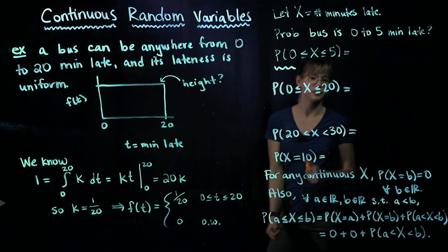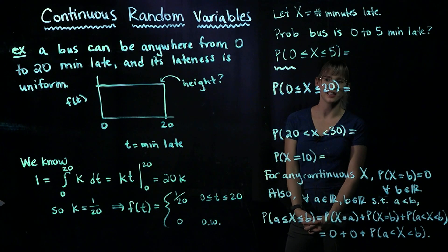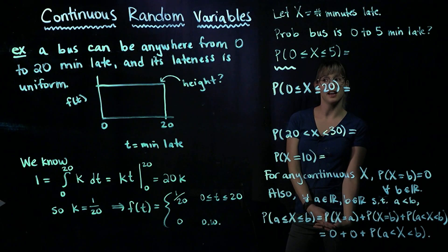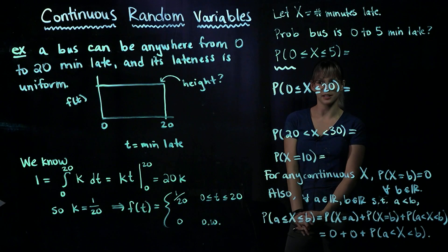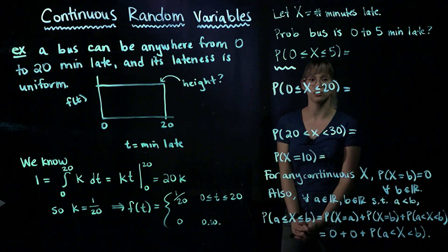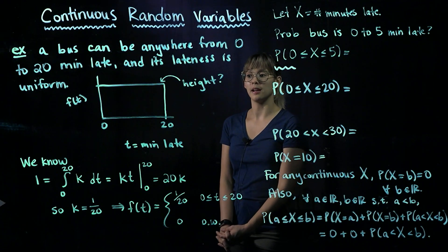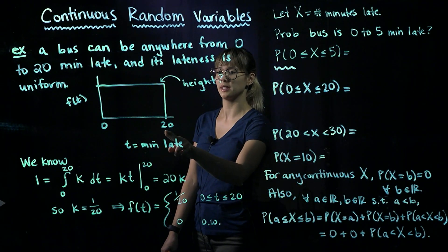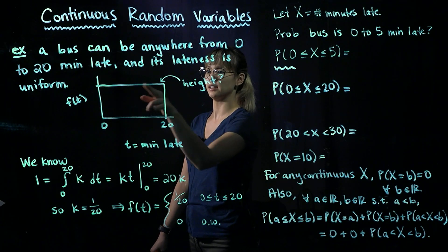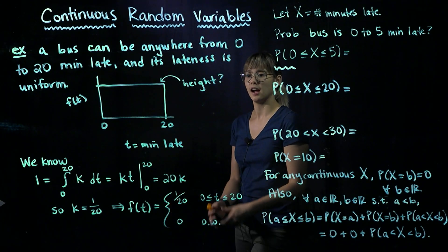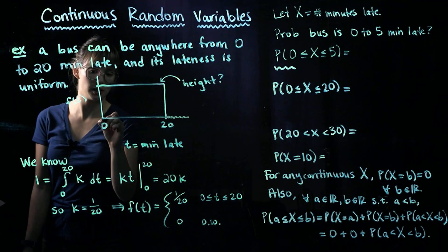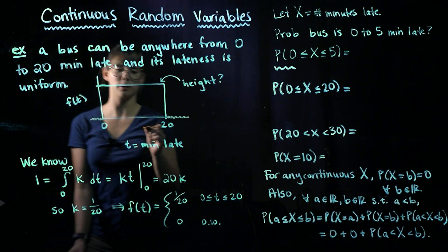Let's check out a simple example to understand continuous random variables. We have a bus that runs anywhere from 0 to 20 minutes late, and its lateness is uniform. If we draw its PDF, it will take on values 0 to 20 with some height, and outside of 0 to 20 the PDF is equal to 0.